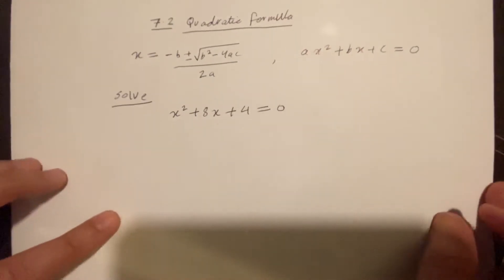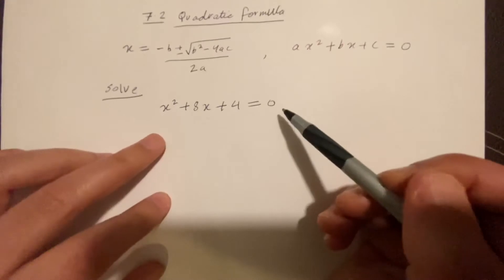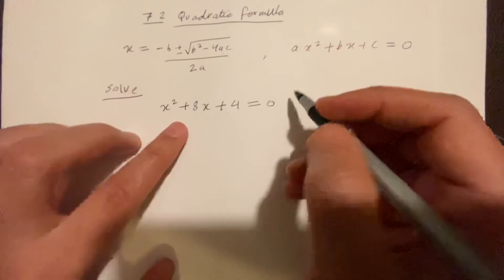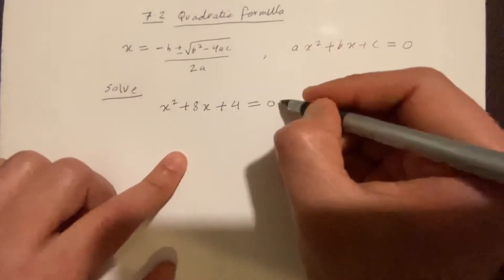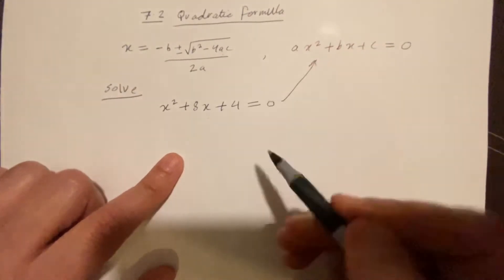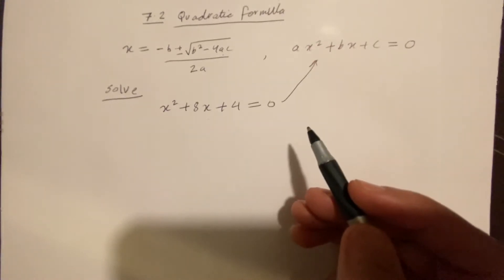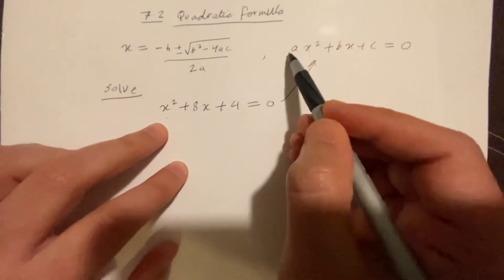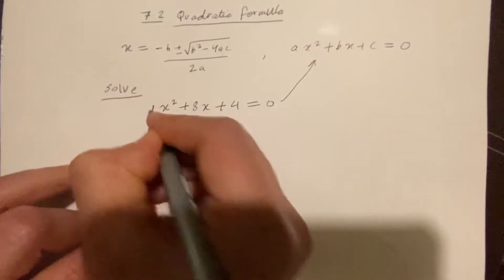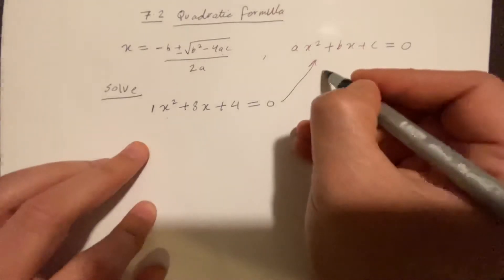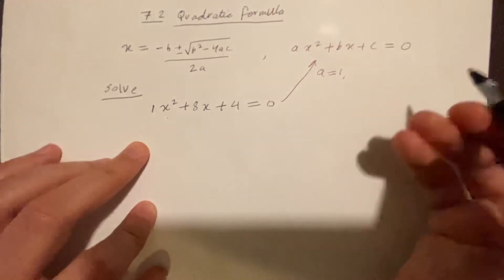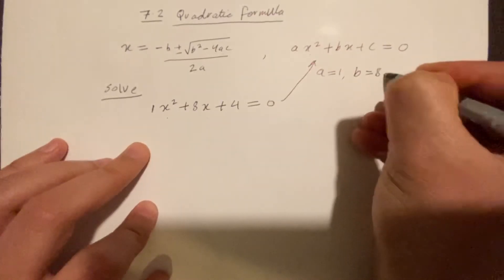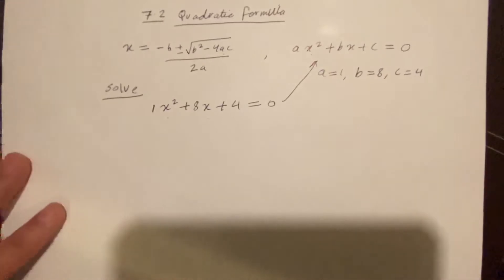To use the quadratic formula, we need the values of a, b, and c. Since we know this is a quadratic equation, we can compare the two equations. We have x squared, so a is 1 — even though we didn't write it, there is always a 1 there. Similarly, b is 8, and c is 4.